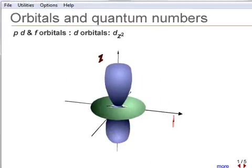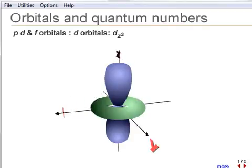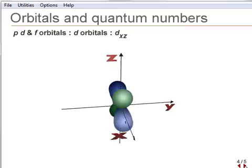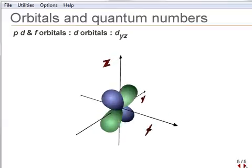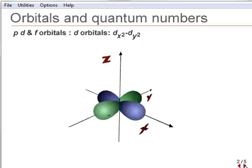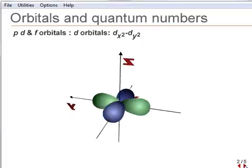D-orbitals have L equals 2, and five allowed n values of minus 2, minus 1, 0, plus 1, and plus 2. There are five D-orbitals for each L equals 2, and D-orbitals exist for n equals 3 or greater.